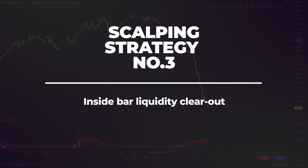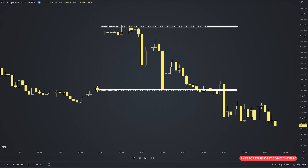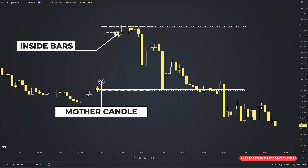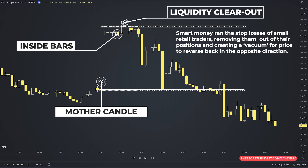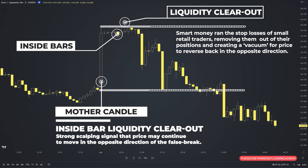Another price action scalping setup involves the inside bar liquidity clearout. Price initially breaks from an inside bar or consecutive inside bars, but then snaps back the other direction, creating a false break of the inside bar structure — a liquidity clearout. Smart money ran the stop losses of small retail traders, removing them from their positions and creating a vacuum for price to reverse back in the opposite direction. The inside bar liquidity clearout is a strong scalping signal that price may continue to move in the opposite direction of the false breakout.